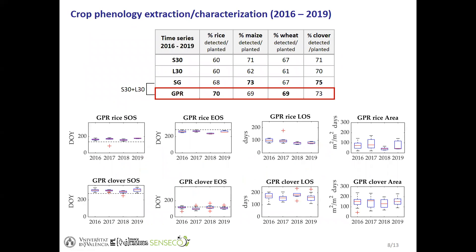Starting with the results: this table shows the number of detected crop cycles relative to the number of planted crops per crop type across all years. The combined sensor time series with both Savitzky-Golay and Gaussian processes were in general the ones detecting the highest number of crops in relative terms. Although they have similar performances, for brevity we chose the Gaussian process time series to carry out the following results presented in this presentation.